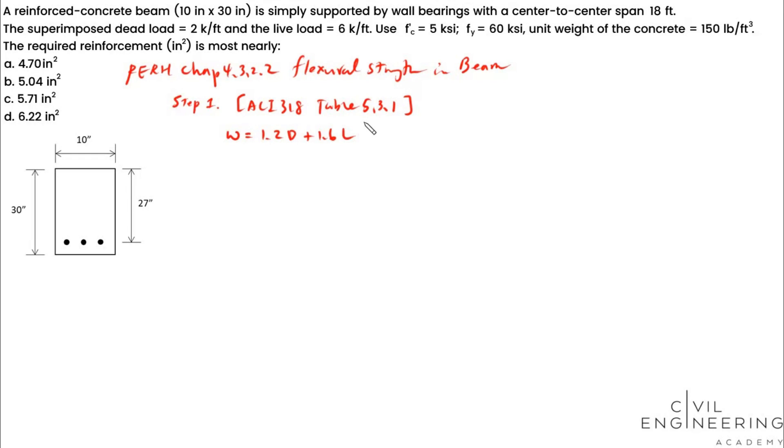So your load combination is going to be 1.2 times dead load plus 1.6 times live load. The live load is pretty straightforward, we use 6 kip per foot, which is provided by the question. But the dead load, you have to be careful. In addition to the superimposed dead load, you also need to account for the self-weight of the beam.